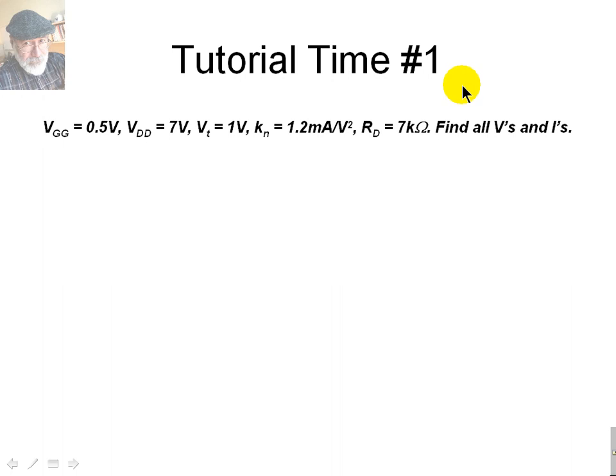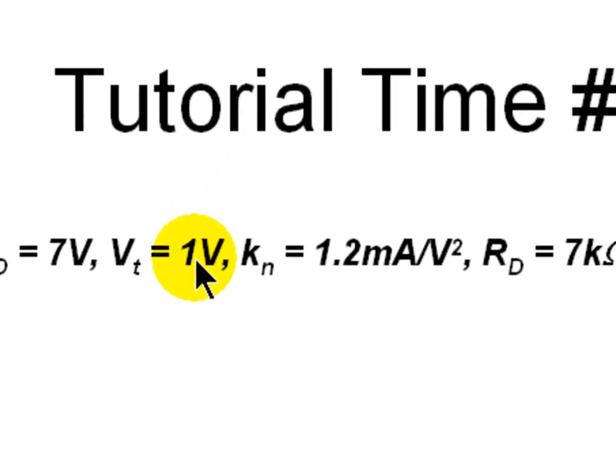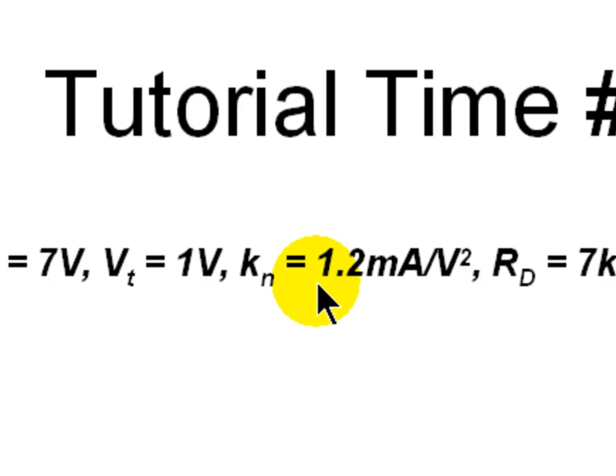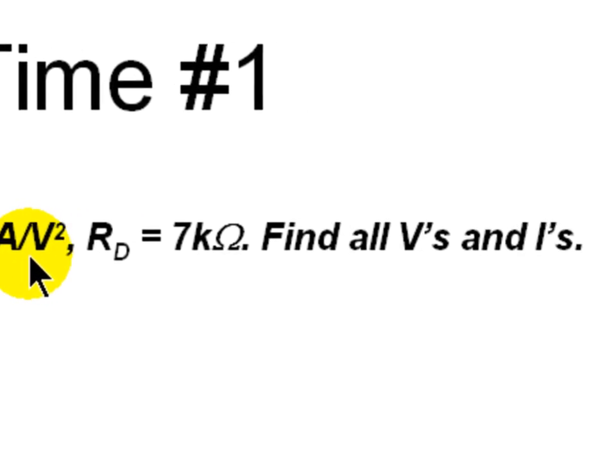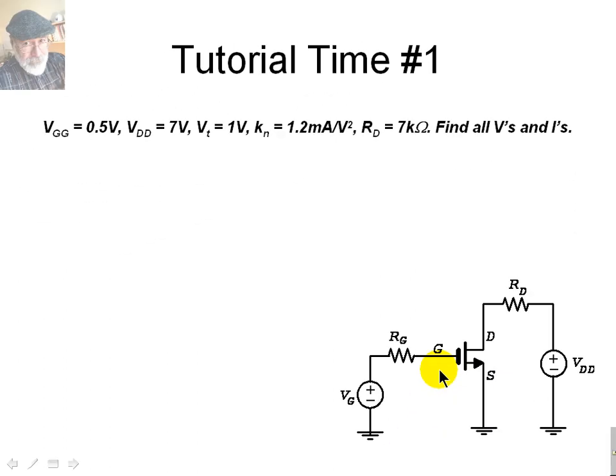Time for our first tutorial. Consider the same circuit as before, and the voltages are given. Half a volt VGG, this one, 7 volts for VDD. The threshold voltage of the transistor is 1 volt. The conductance coefficient is 1.2 mA per volt squared. RD is 7,000 ohms. And we don't even need RG for the DC analysis. Find all voltages and currents in this circuit. Very well. Let's see.